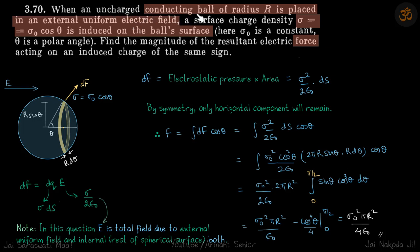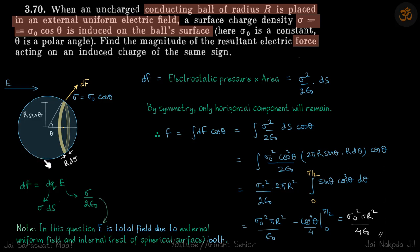An uncharged conducting ball of radius R is placed in an external uniform electric field. Some charge will be induced on this ball because of the field — positive charge will come on the right side and negative charge will come on the left side.